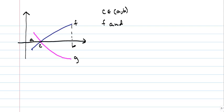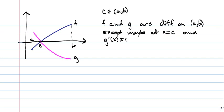And let's suppose that F and G are differentiable on this interval. So we have F and G are differentiable in that interval, except, let's make the exception that maybe at X equals C. In other words, F and G are differentiable except maybe at X equals C. And let's do this, and G prime of X does not equal 0 on AB, except maybe at X equals C.